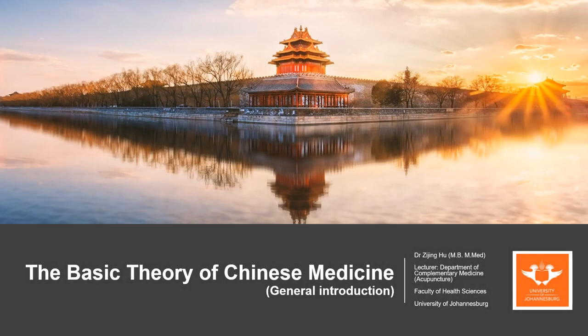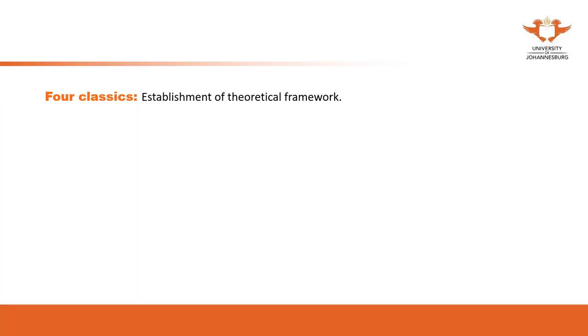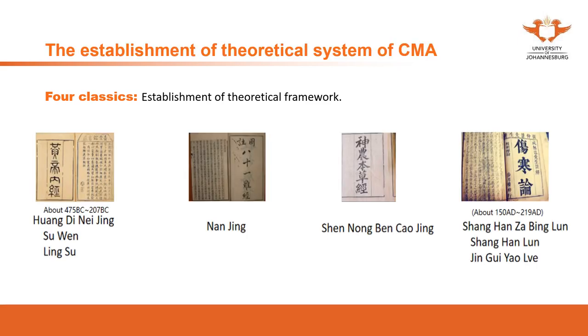Today, in this video, we are going to introduce the theoretical framework from the four classics perspective. The four classics include the Huangdi Neijing, Nanjing, Shennong Bencao Jing, and Shanghan Zabing Lun. These four books are considered the classics in Chinese medicine.